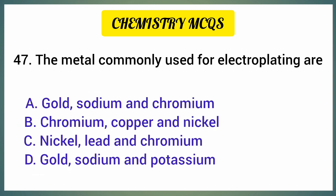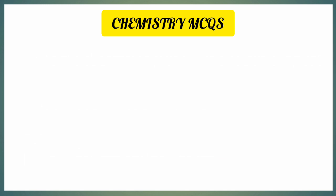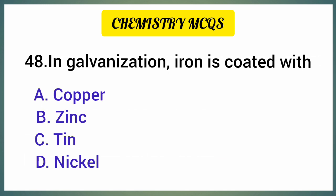The metals commonly used for electroplating are — correct option is option B. In galvanization, iron is coated with — correct option is option B: Zinc.